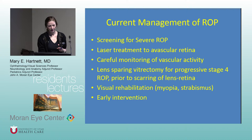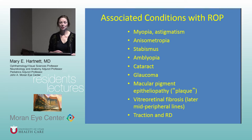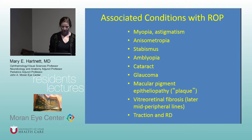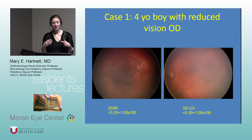These are some conditions that can occur later with ROP. In the teenage years, with myopia as the eye grows, children can develop later retinal detachment. They have the potential for retinal detachment throughout life and must have continual monitoring.